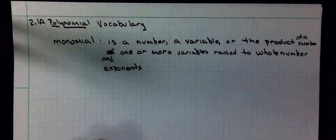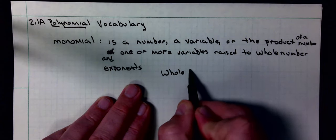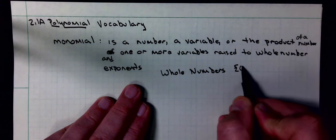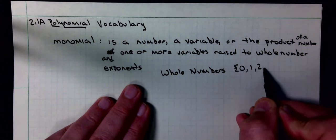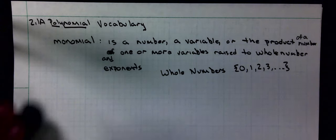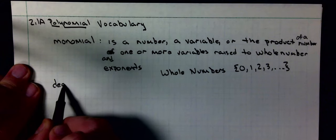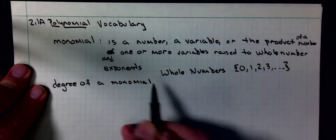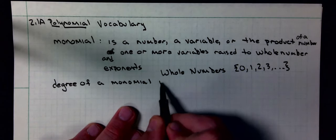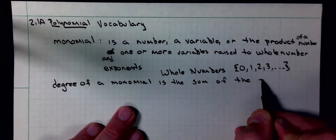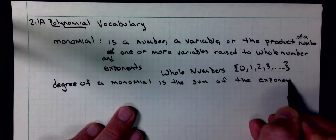And one or more variables raised to whole number exponents. Whole numbers are the set of numbers that go 0, 1, 2, and so on. The degree of a monomial is the sum of the exponents of the variables.